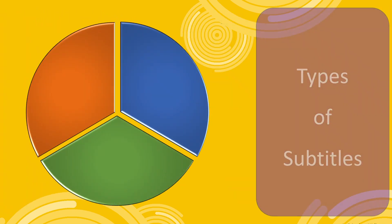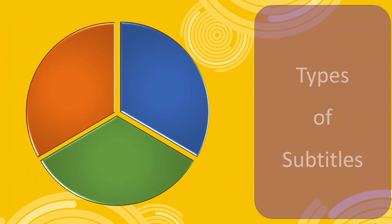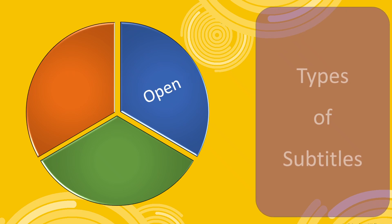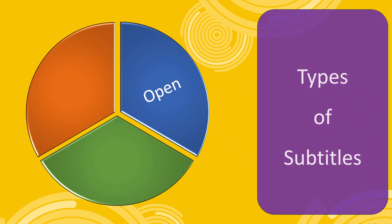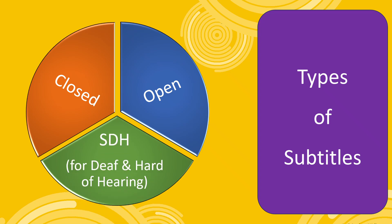There are three types of captions. Open captions can't be disabled. Closed captions can be turned off, while SDH is intended for the deaf or people with hearing problems.